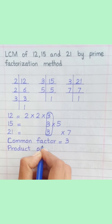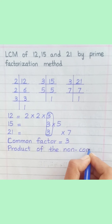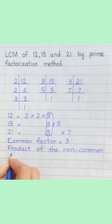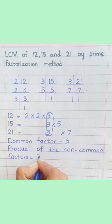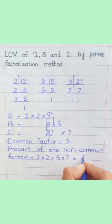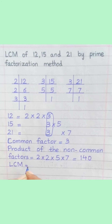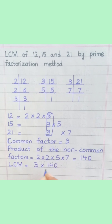Product of the non-common factors equals 2 × 2 × 5 × 7 = 140. Therefore, LCM = 3 × 140 = 420.